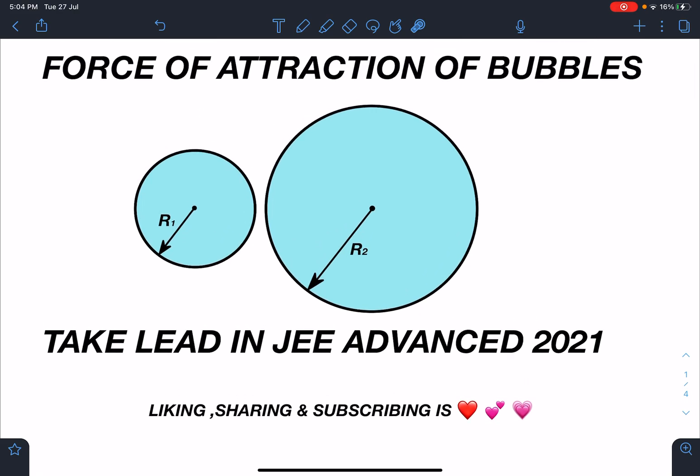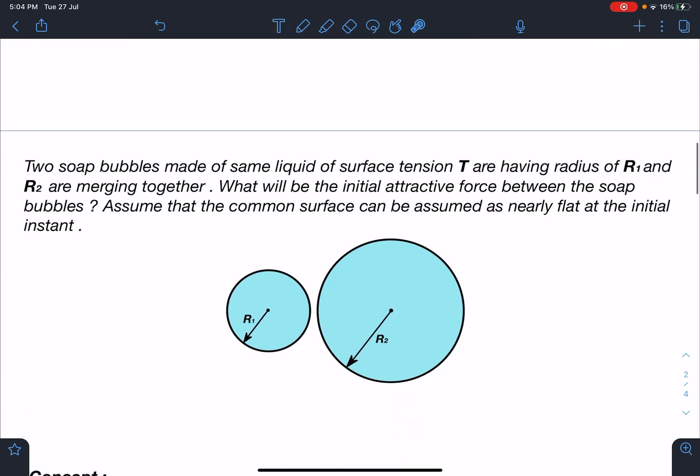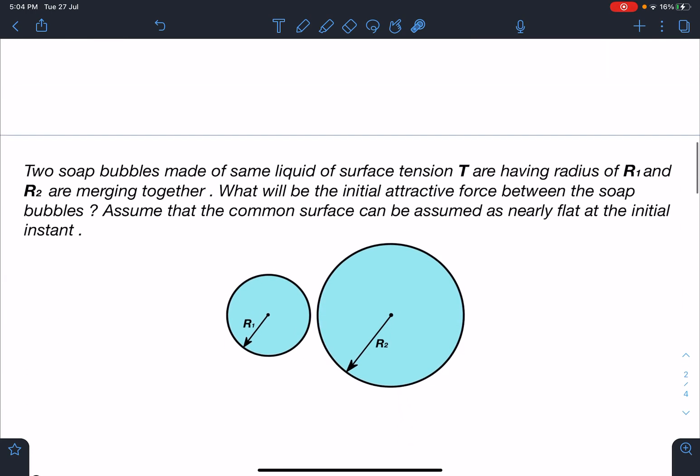So here is the problem statement: Two soap bubbles made of same liquid of surface tension T are having radius of R1 and R2 and are merging together. What will be the initial attractive force between the soap bubbles?